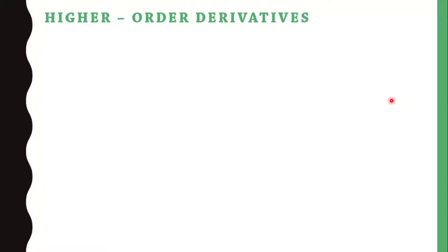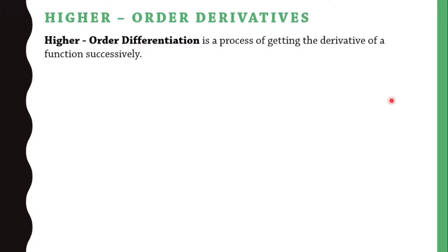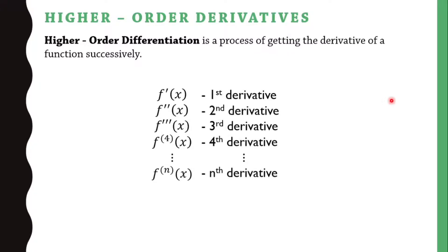What are higher order derivatives, or what is higher order differentiation? When we say higher order differentiation, this is the process of getting the derivative of a function successively. These are the second derivative or higher, wherein the derivative is the derivative of the first, the second, and so on.